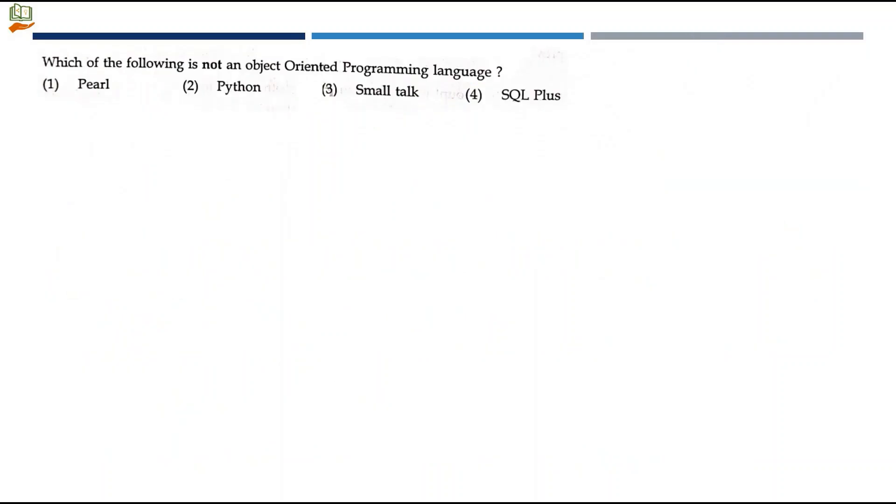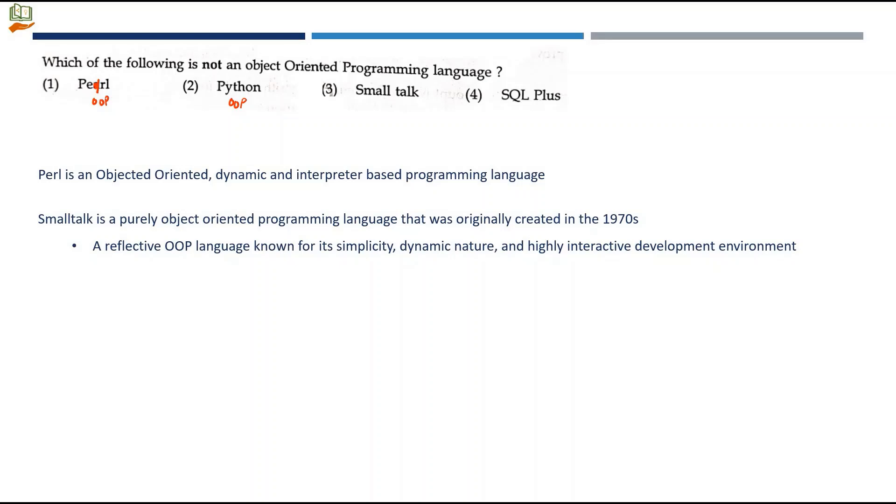Next question: which of the following is not an object oriented programming language? P-E-R-L is the correct spelling. Perl is an object oriented, dynamic, and interpreter based programming language. Python is an object oriented programming language. What about Smalltalk? It is a purely object oriented programming language originally created in the 1970s. A reflective OOP language known for its simplicity, dynamic nature, and highly interactive development environment. Primitive values such as integers, booleans, and characters are also objects. That's why they give the term purely object oriented programming language.